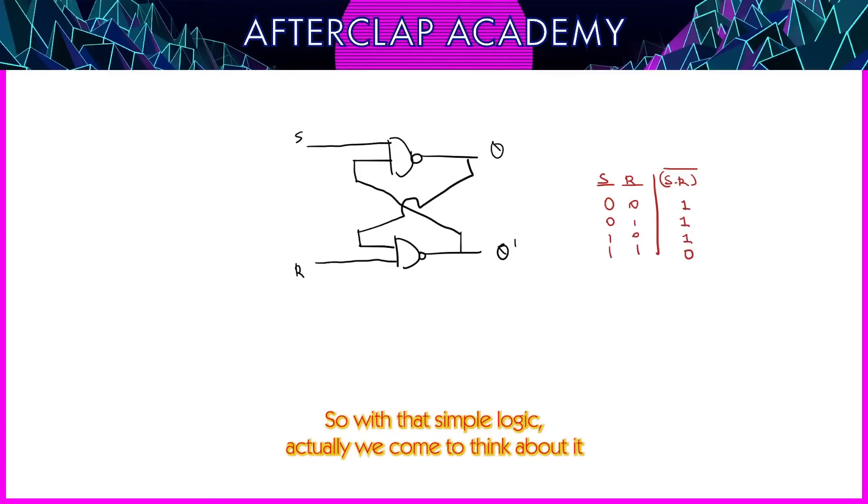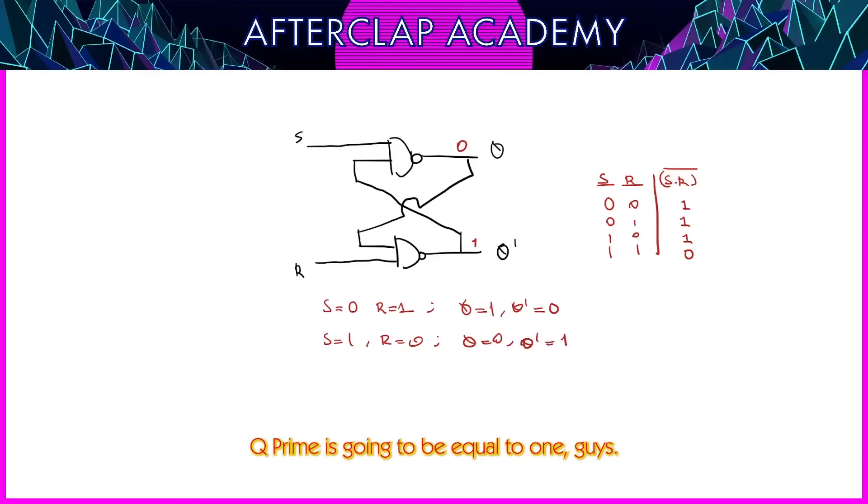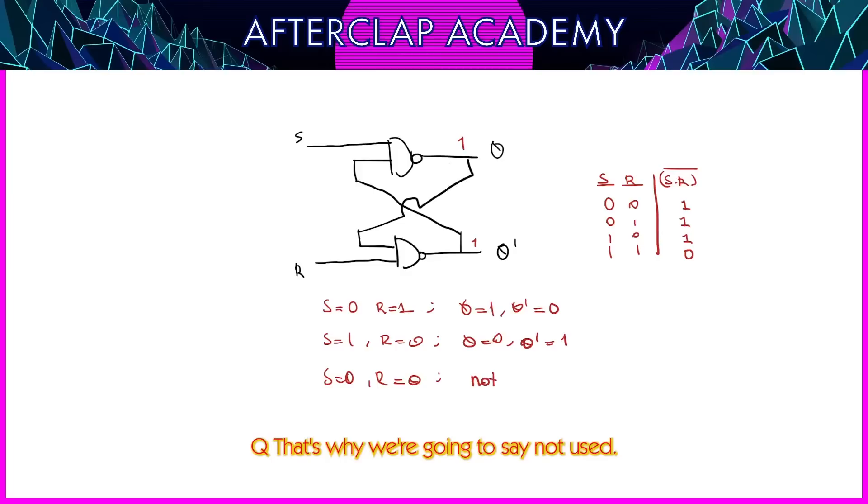With that simple logic, we come to think about it. Whenever I have S equals 0 and R equals 1, I could easily see that the output of the first NAND gate is going to be 1 and the second one is going to be 0. So that means Q equals 1 and Q prime equals 0. Whenever S equals 1 and R equals 0, in that case, the situation will just reverse. Here we're going to have 0 and here we're going to have 1. So Q is going to be equal to 0, Q prime is going to be equal to 1. What about when S equals 0 and R equals 0? In that case, both of the outputs would be 1, which is a problematic case because the complement of something cannot be equal to itself. Q cannot be equal to complement of Q. That's why we're going to say not used. This is as easy as it gets. This is the truth table of an SR latch.